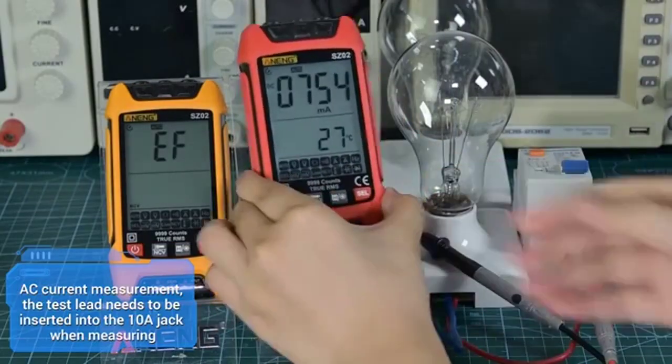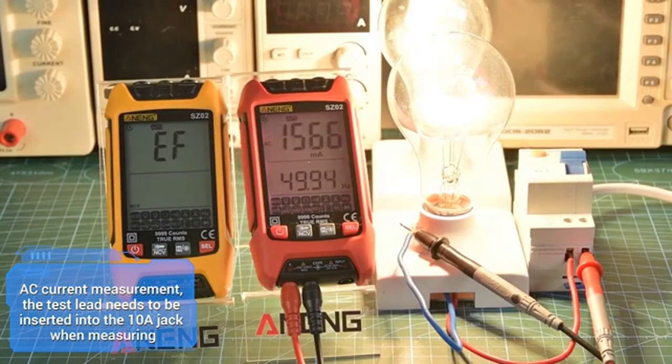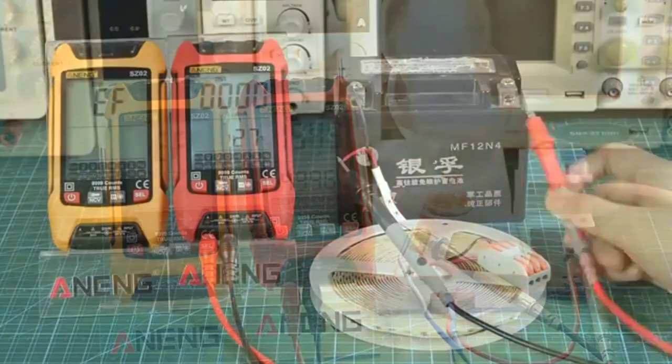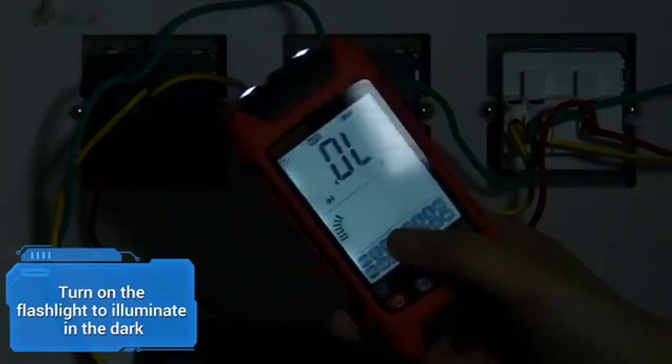For AC current measurement, the test lead needs to be inserted into the 10A jack when measuring. For DC current measurement, measure the current of the light strip when it is working.